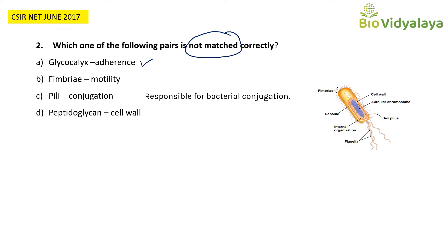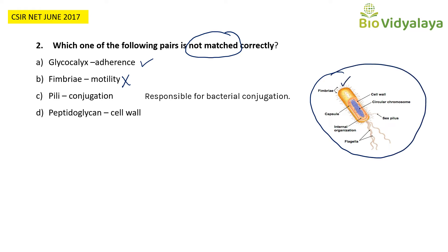Next, fimbriae — motility: this is not correct. Fimbriae are small fiber-like structures that help in attachment of bacteria to a surface, so they are specialized for attachment, not for motility. This pair is not correct — fimbriae are for attachment, not motility.